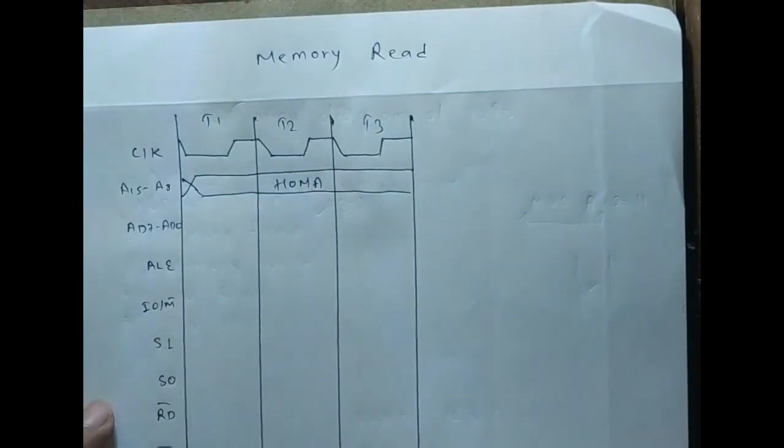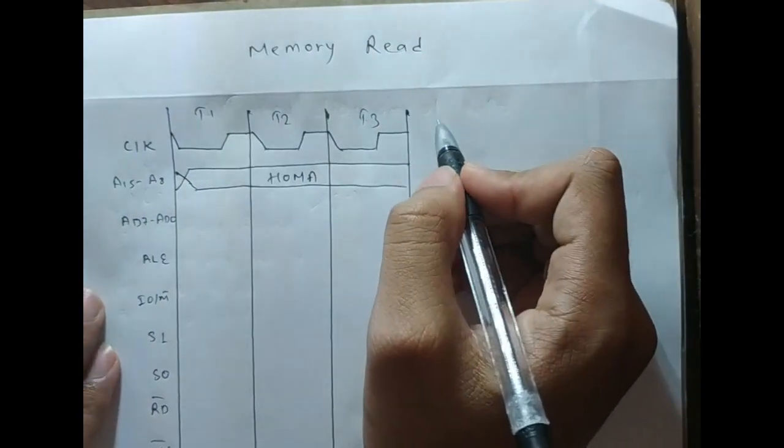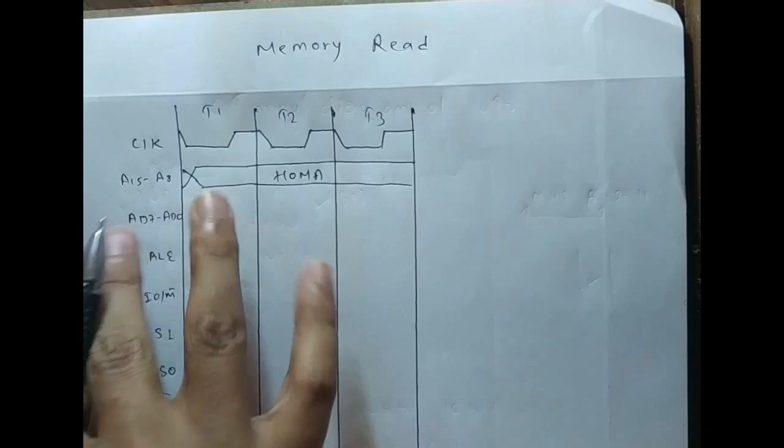In the previous diagram there was a fourth state to decode, but in memory read decoding doesn't happen, so we just have three states.